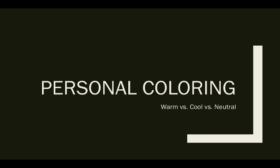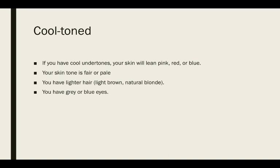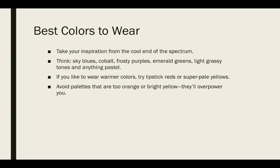We are going to talk about personal coloring. And there's three types of coloring. There's warm, cool, and neutral. Cool-toned, if you have cool undertones, your skin is going to lean to be pink, red, or blue. Your skin tone is typically fair or pale. You have light hair like a light brown or a natural blonde. And you're going to have typically gray or blue eyes. The best colors to wear if you are a cool-toned person is to take your inspiration from the cool end of the spectrum. You're going to go with sky blues, frosty purples, light grassy tones, anything pastel. If you like to wear warm colors, you can try a lipstick type red or a super pale yellow. Avoid palettes that are really orange or bright yellowy because they'll overpower you.